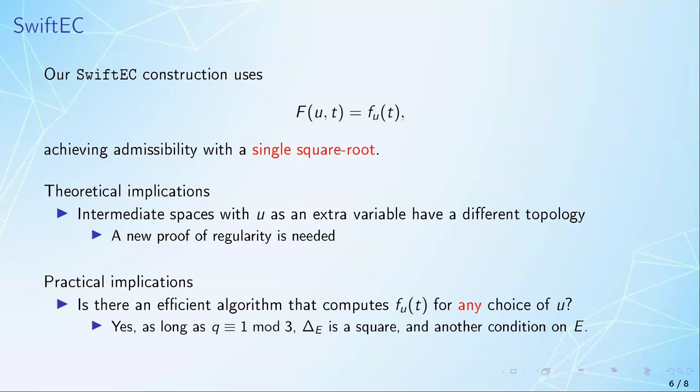This change is quite simple to convey, but it has very deep implications. The SW maps are actually a composition of maps that go through various intermediate spaces, parametrized by u. So now that u is a variable, the geometry is completely different, and we need a new proof of regularity, which is one of the main theoretical contributions in the paper.